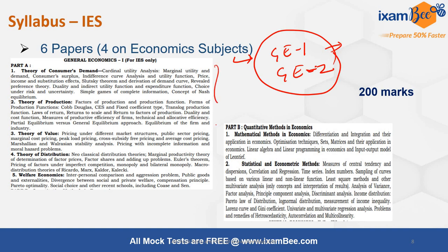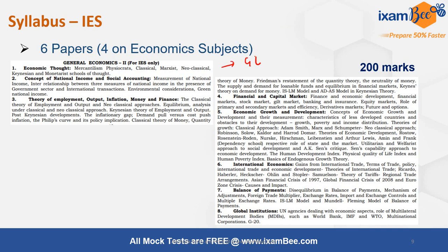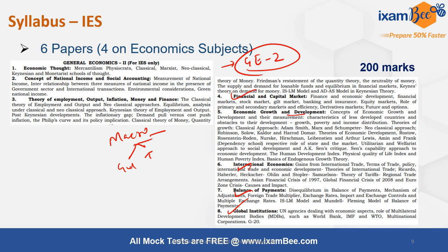GE Paper 1 covers microeconomics, statistics, econometrics, and mathematical methods — this portion constitutes about two-thirds of the Phase 1 DEPR syllabus. The remaining one-third is covered by GE Paper 2 of IES, which includes macroeconomics, growth and development, trade, balance of payments, global institutions, financial and capital markets. Topics like the Harrod-Domar model, the Solow model, and various growth and development theories are required.